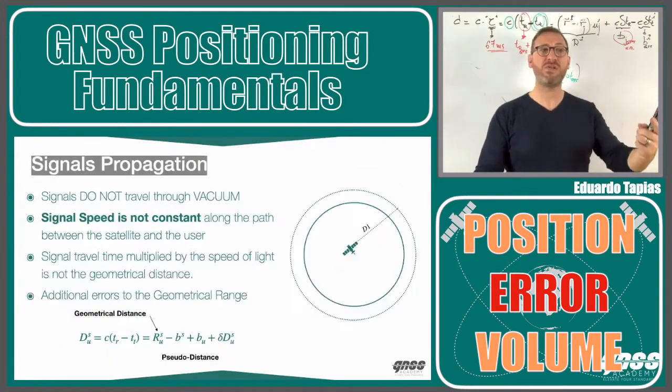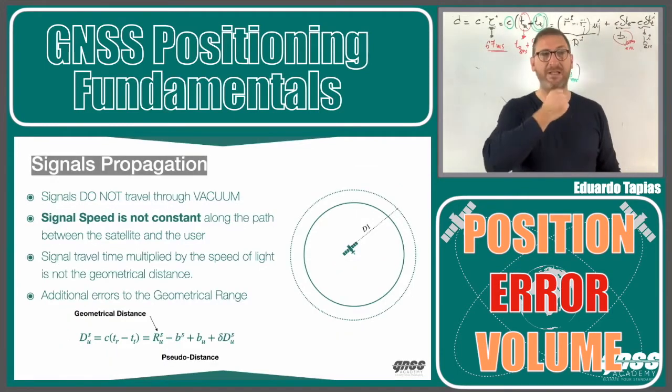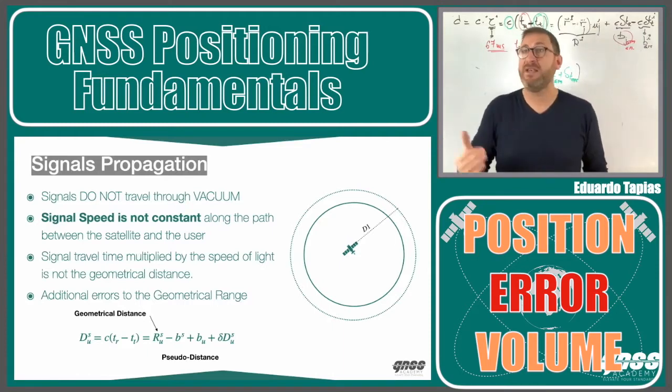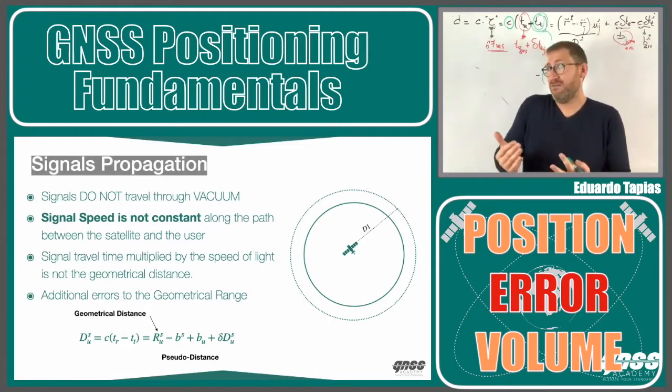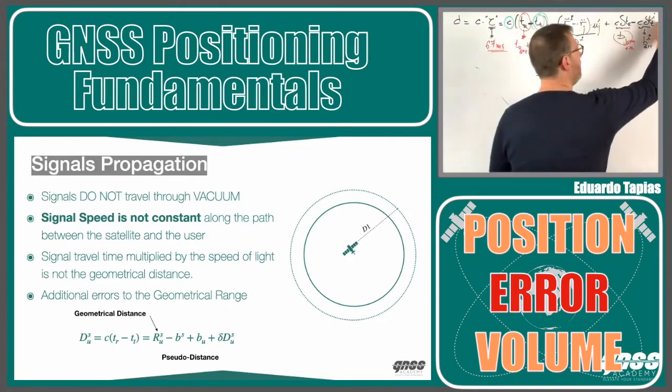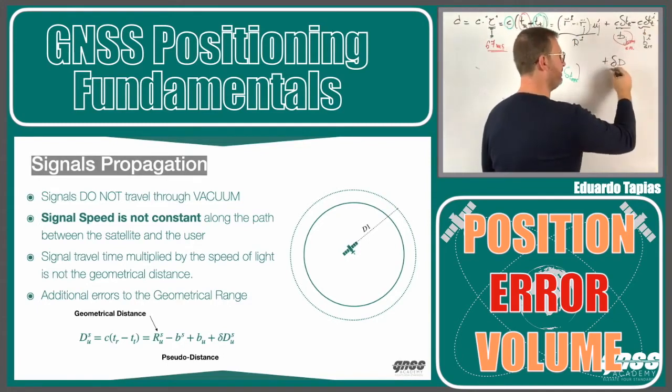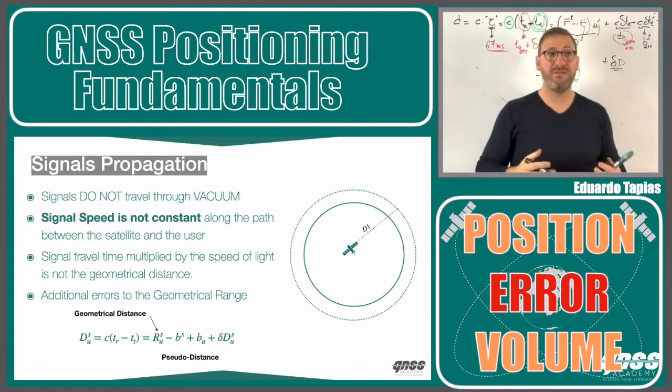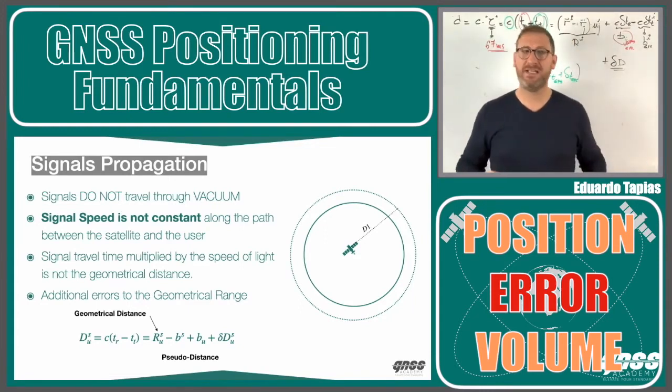And the other assumption was the speed of the signal is not speed of light, will be a little bit lower, because we have to go through different effects. I have to add here another value, which is a delta d, a delta d because of this velocity of the signal.